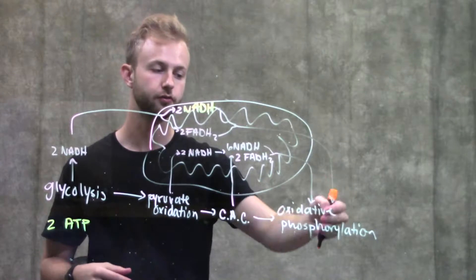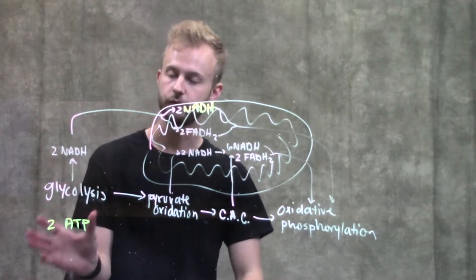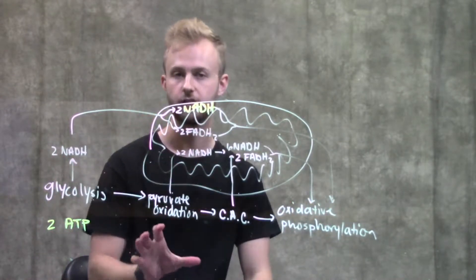Those molecules will go directly to oxidative phosphorylation, but pyruvate from glycolysis will go on to pyruvate oxidation.